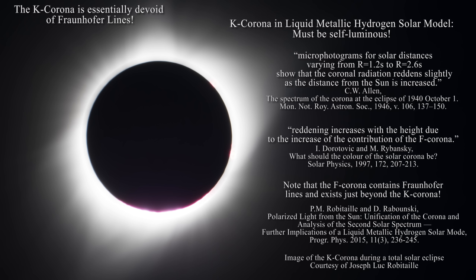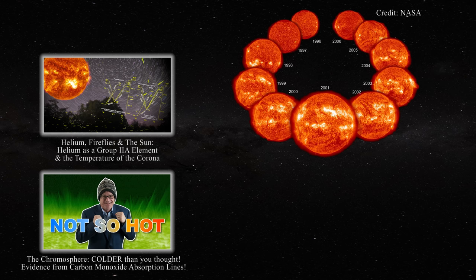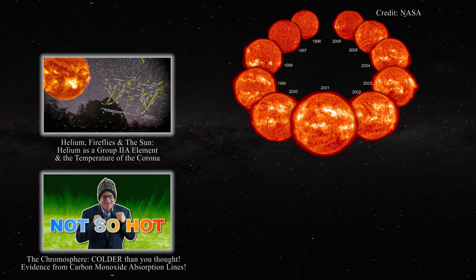Another line of evidence that the solar atmosphere is cooling with elevation was discovered when monitoring carbon monoxide absorption in the chromosphere — the carbon monoxide absorption indicates cooling with elevation, not heating. In the last video, a series of images obtained in helium was provided. Given these images, it is clear that the corona is not at millions of Kelvin as currently claimed by the standard solar model.